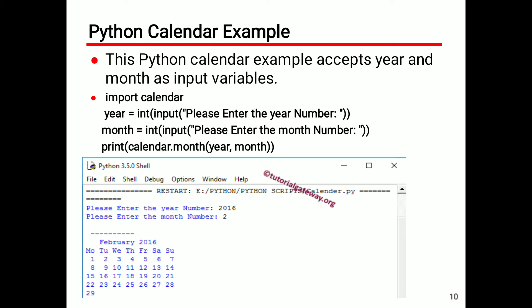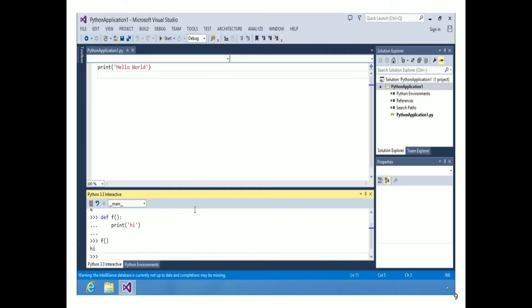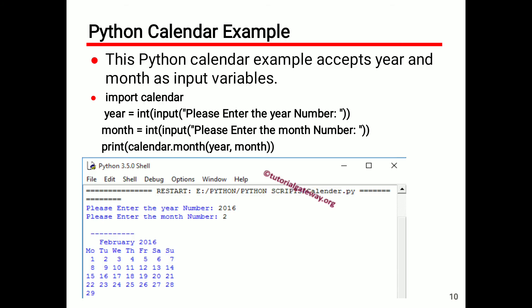You have to see the example of a calendar program using Python. This Python calendar example accepts year and month as input variables. The code is: import calendar. year = int(input('Please enter the year number:')).